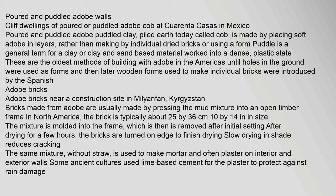Cliff dwellings of poured or puddled adobe cob can be found at Cuarenta Casas in Mexico. Puddled clay, or piled earth today called cob, is made by placing soft adobe in layers rather than making individual dried bricks or using a form. 'Puddle' is a general term for a clay or clay-and-sand-based material worked into a dense, plastic state. These are the oldest methods of building with adobe in the Americas, until holes in the ground were used as forms and later wooden forms used to make individual bricks were introduced by the Spanish.